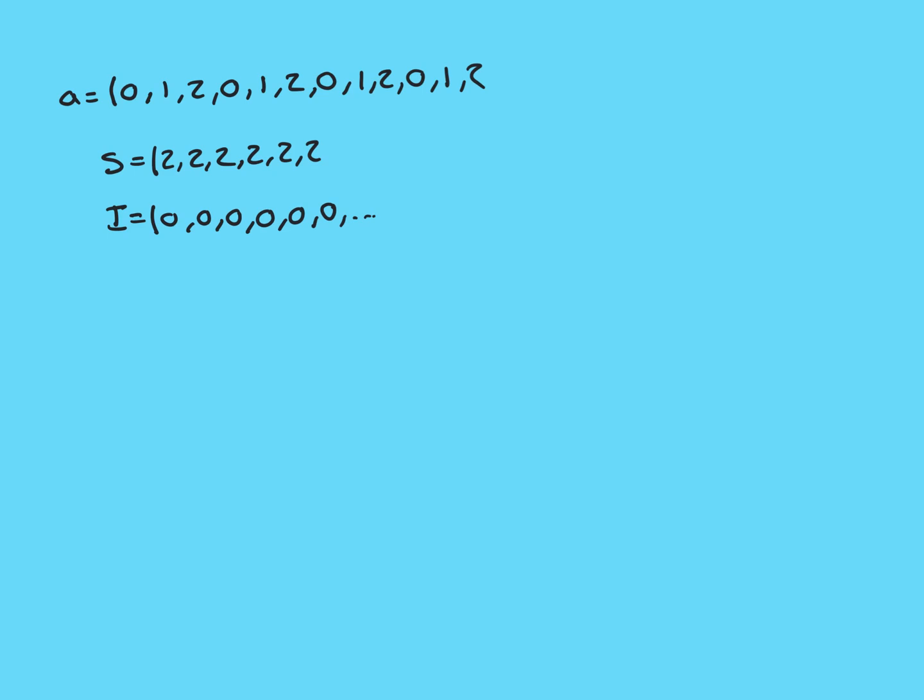So one more example before we move on. Let's take the sequence 0, 1, 2, 0, 1, 2, 0, 1, 2, and it continues on like this forever. And let's think about what its limit superior and limit inferior are.